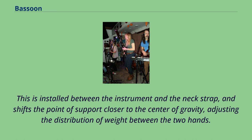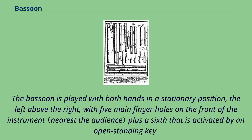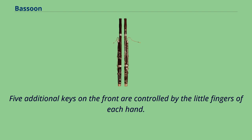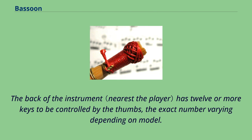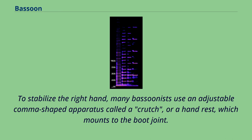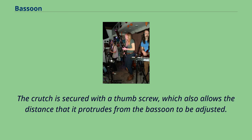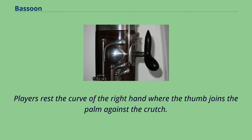The bassoon is played with both hands in a stationary position, the left above the right, with five main finger holes on the front of the instrument plus a sixth that is activated by an open standing key. Five additional keys on the front are controlled by the little fingers of each hand. The back of the instrument has 12 or more keys to be controlled by the thumbs. Many bassoonists use an adjustable comma-shaped apparatus called a crutch, or hand rest, which mounts to the boot joint. The crutch also keeps the right hand from tiring and enables the player to keep the finger pads flat on the finger holes and keys.